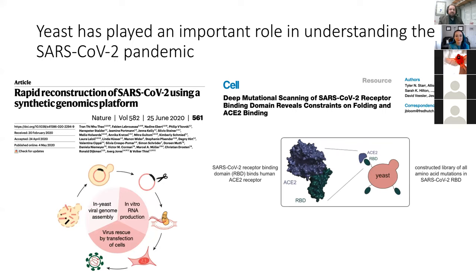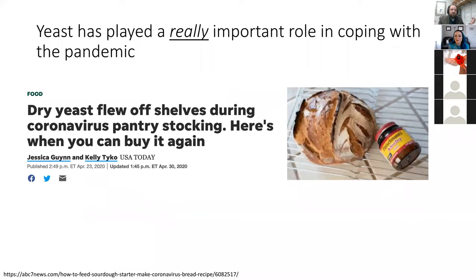This past year, yeast has played an important role in understanding the coronavirus pandemic. Investigators have used yeast as a tool to efficiently reconstruct the coronavirus genome without the need for human cells. And yeast is being used to understand how the coronavirus spike protein interacts with the ACE2 receptor, which is an early step in coronavirus infection.